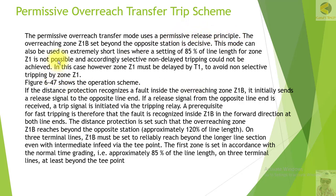The overarching zone Z1B is set beyond the remote end position and is decisive. This mode can also be used on extremely short lines where a setting of 85% of line length for zone 1 is not possible, and accordingly selective non-delayed tripping could not be achieved. In this case, zone 1 must be delayed by T1 to avoid non-selective tripping.